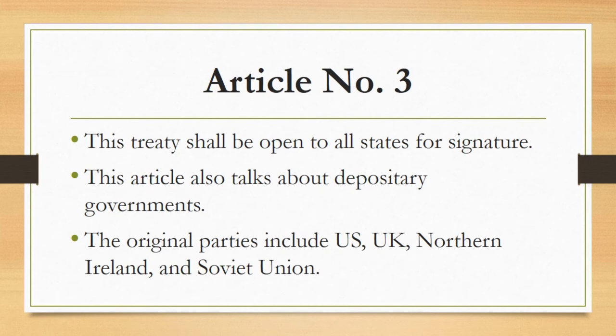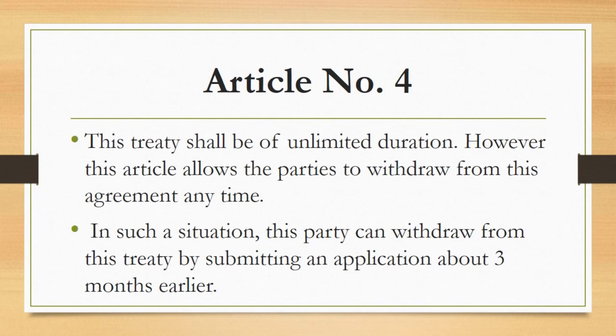Article number three: this treaty shall be open to all states for signature. This article also talks about depository governments — the original parties of this treaty, which include the US, UK, Northern Ireland, and Soviet Union. Article number four: this treaty shall be of unlimited duration; however, parties may withdraw at any time if the supreme interests of that particular party are in danger.